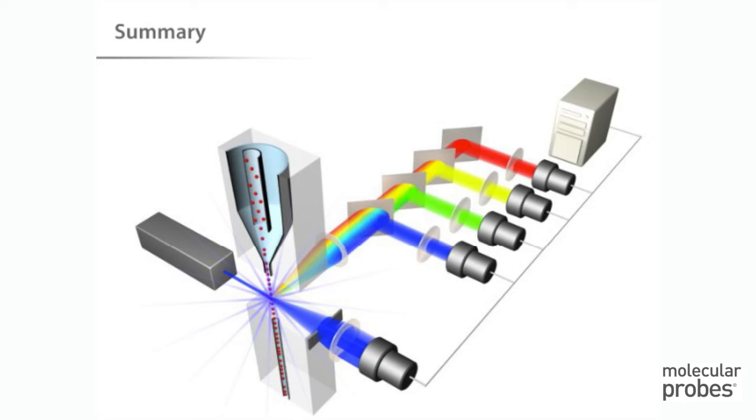Four to six color experiments are becoming easier. A few labs in the world are able to distinguish up to 18 colors simultaneously. In the next tutorial, we will talk in more detail about some of the trickier aspects of data analysis that are employed in flow cytometry.